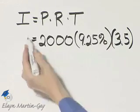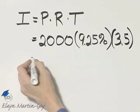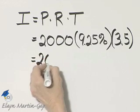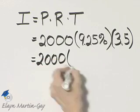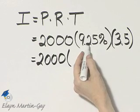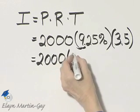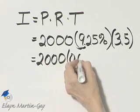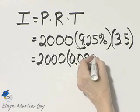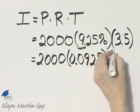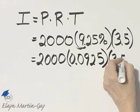So to find the simple interest we multiply. Let's just take a moment and write our percent as an equivalent decimal. Remember, move the decimal point two places to the left. That would be 0.0925, and then times 3.5.